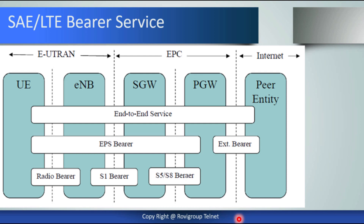The dedicated bearer is established by the network to allow the flow of traffic between the UE and the PGW. The quality of service used for this bearer depends on the type of traffic carried — for example, background, interactive, streaming, or conversational services each use different quality of service. The dedicated bearer is maintained until the data has been transferred. A radio bearer transports the packets of an EPS bearer between the eNodeB and the UE. An S1 bearer transports packets between an eNodeB and a serving gateway, and an external bearer connects the PGW to the peer entity.